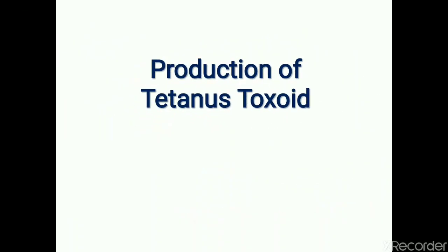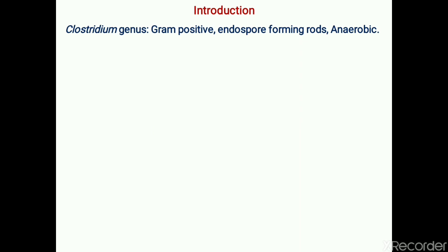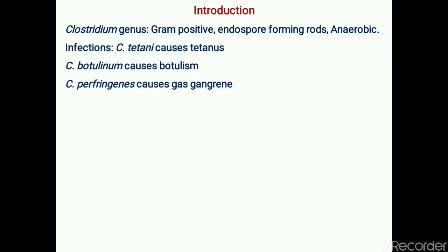Production of Tetanus Toxoid. The Clostridium genus is characterized as gram-positive, endospore-forming, rod-shaped bacteria and they are anaerobic in nature. They are responsible for several related infections in human beings, such as Clostridium tetani causing tetanus, Clostridium botulinum causing botulism, and Clostridium perfringens causing gas gangrene.